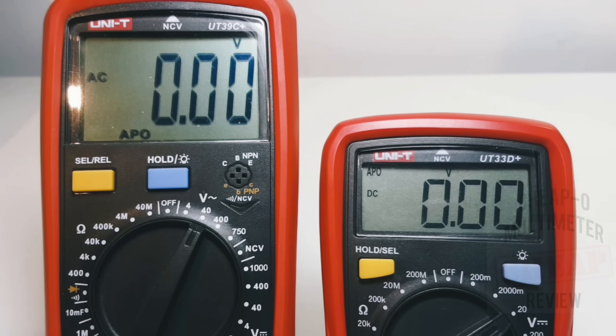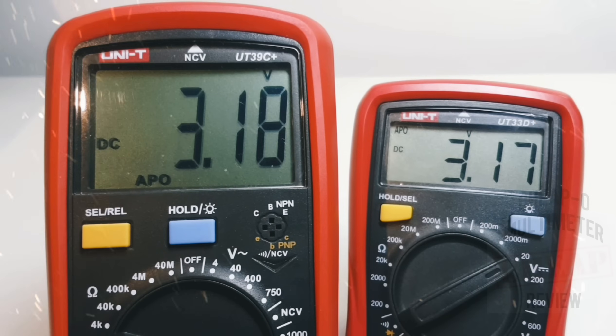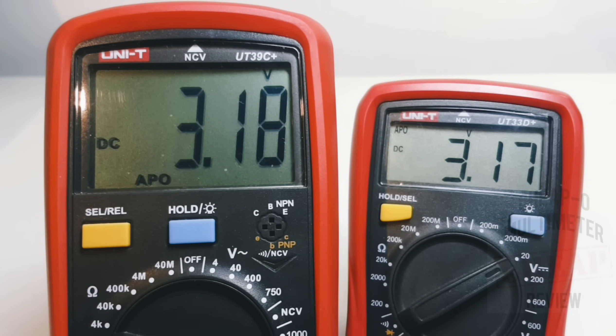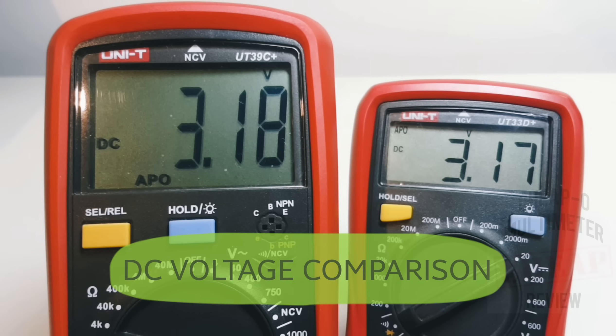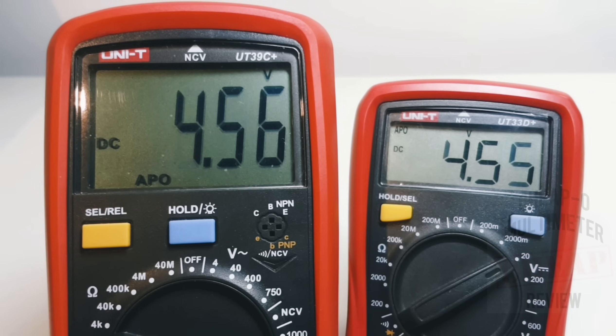All right, it is time to do a DC voltage comparison. 39C+ up against the 33D+, sitting at 3.1 volts DC. Here we go. Let's take it up to a whopping 8.8 volts, 8.9 actually. 8.99, no, 9.0. Well, what's it going to be? 9.0, okay, make up your mind. 39, 8.99 volts, that's it. That's what we're going for, and 8.99 for the 33D+.